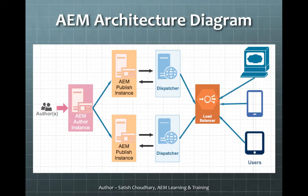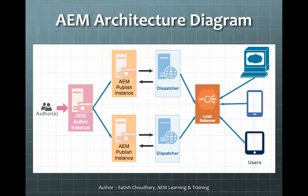This is a general or very common AEM architecture diagram. We have an author instance, then we have a publish instance, then we can have dispatchers, then we have load balancers and the end users. In the typical AEM architecture, we have one author instance. That's where the content authors go in and create pages, create assets. But this is not a customer-facing server — this is for authoring. It really contains all the nodes.